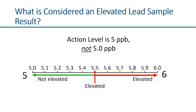Additionally, if your lab reports the results to two decimal places — for example, 5.49 parts per billion — this would still be considered not elevated when it is rounded to the nearest integer of five.